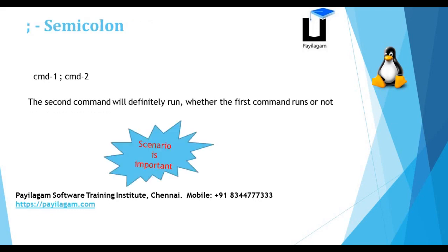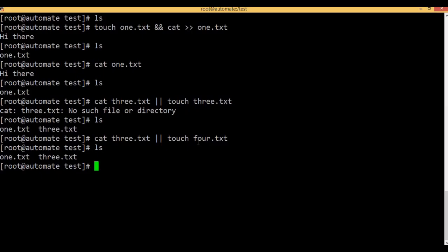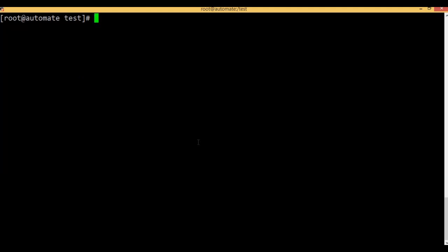This is the last command. The semicolon is used between two commands. The command to run the second command — if the first command executes, it will run. If you want to run the second command, there is a .txt. The command is the .txt.